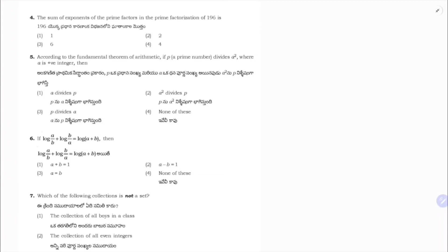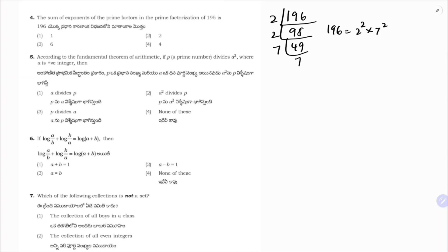Question 4: the sum of the exponents of the prime factors in the prime factorization of 196. Prime factorize: 196 = 2 × 98 = 2 × 2 × 49 = 2 × 2 × 7 × 7. So 196 = 2² × 7². Sum of exponents is 2 + 2 = 4. Correct option is 4.